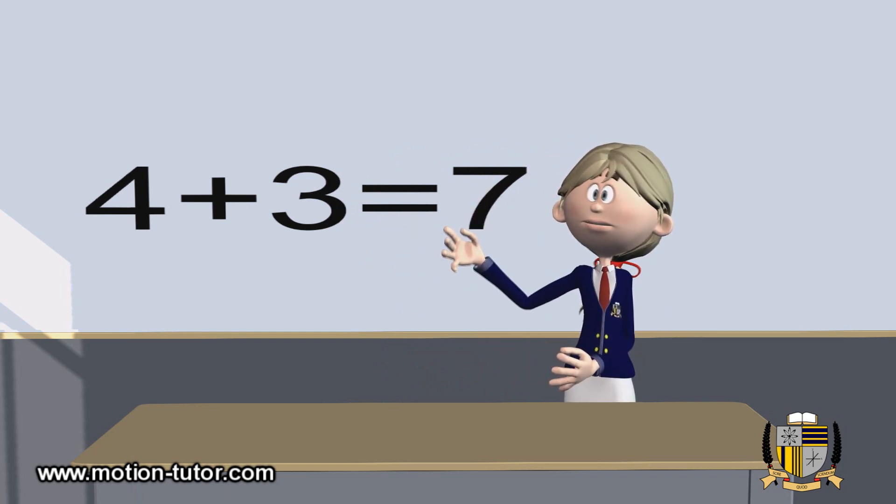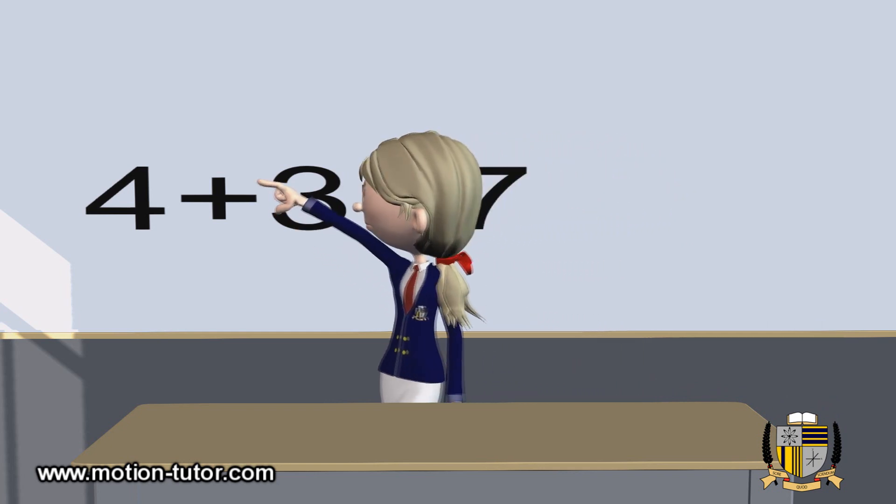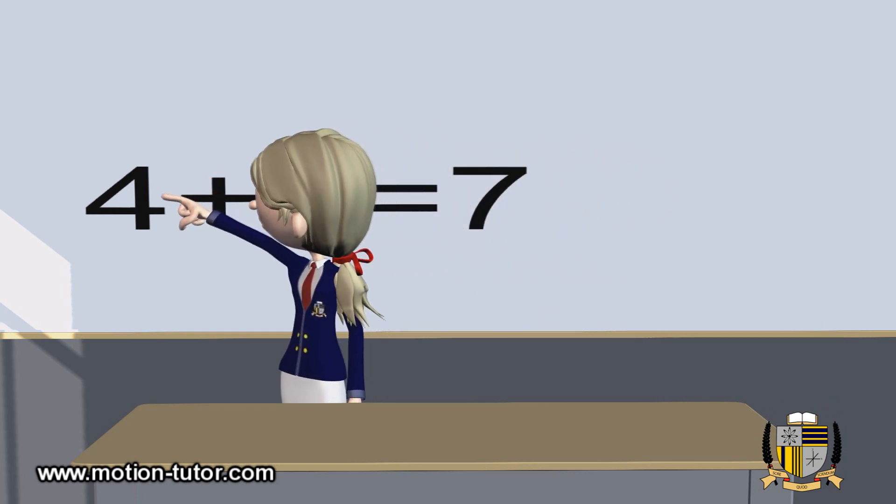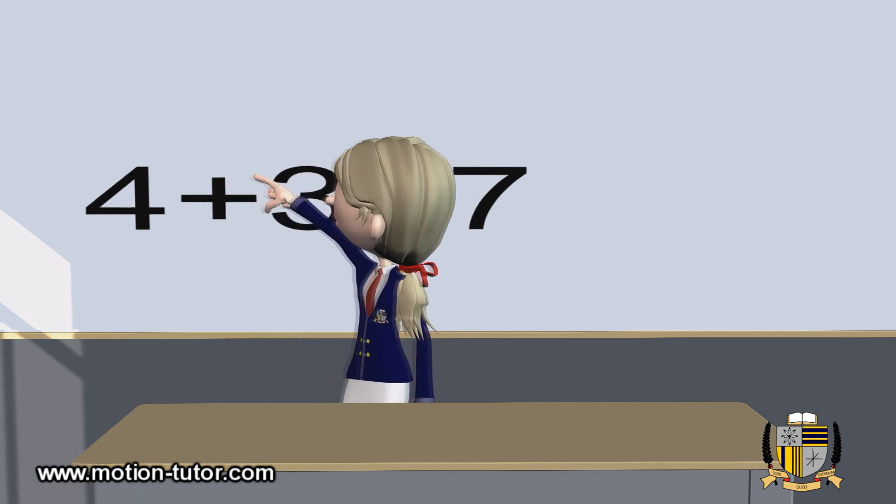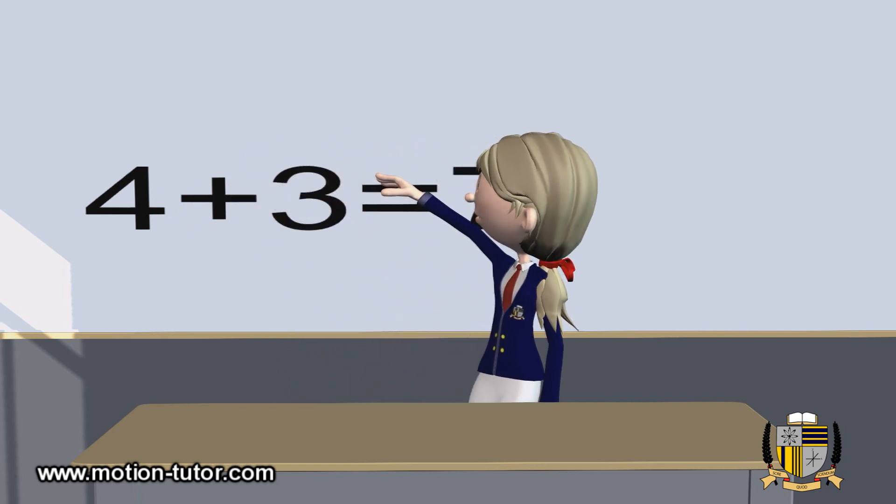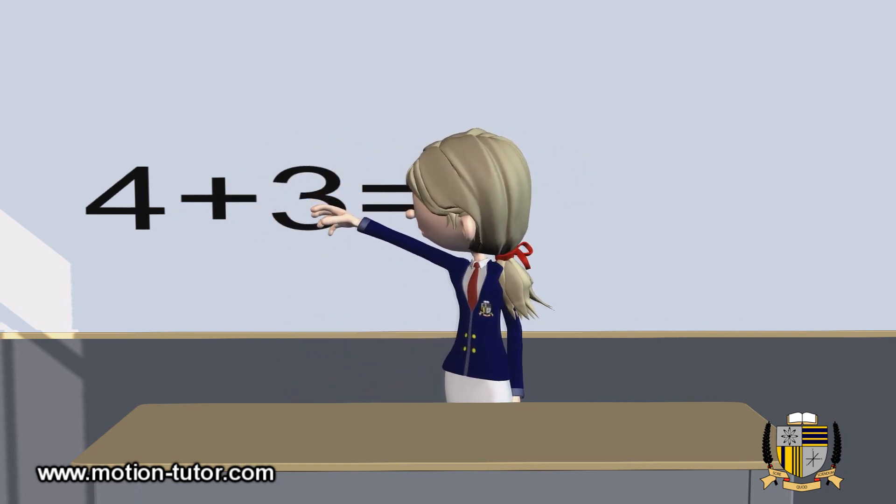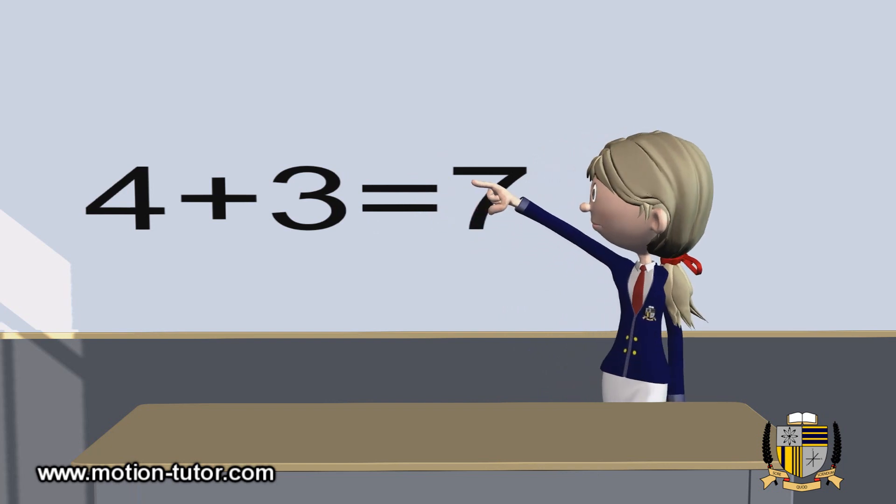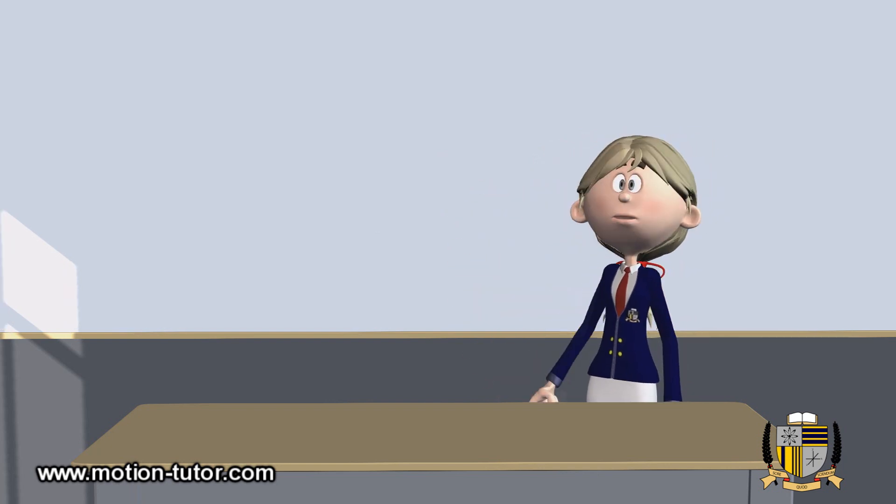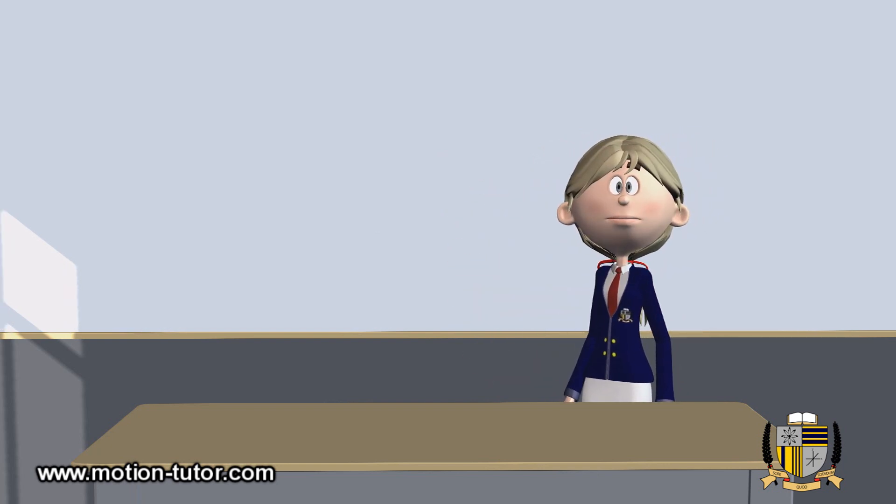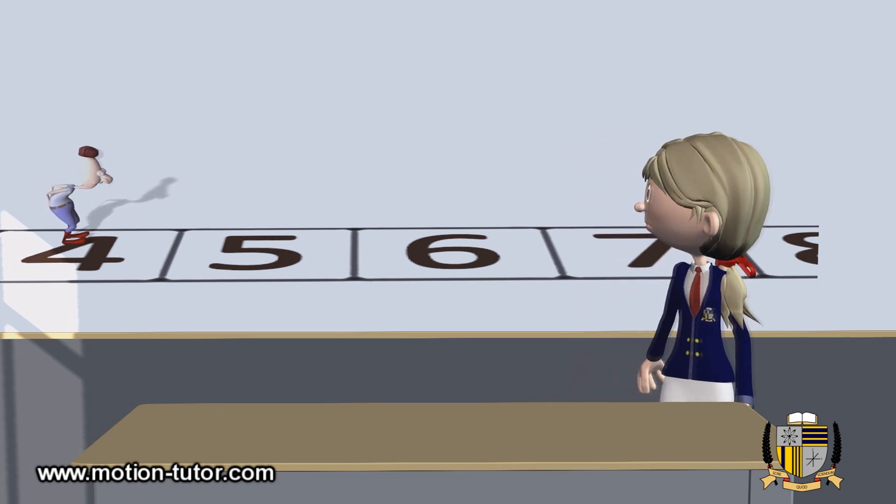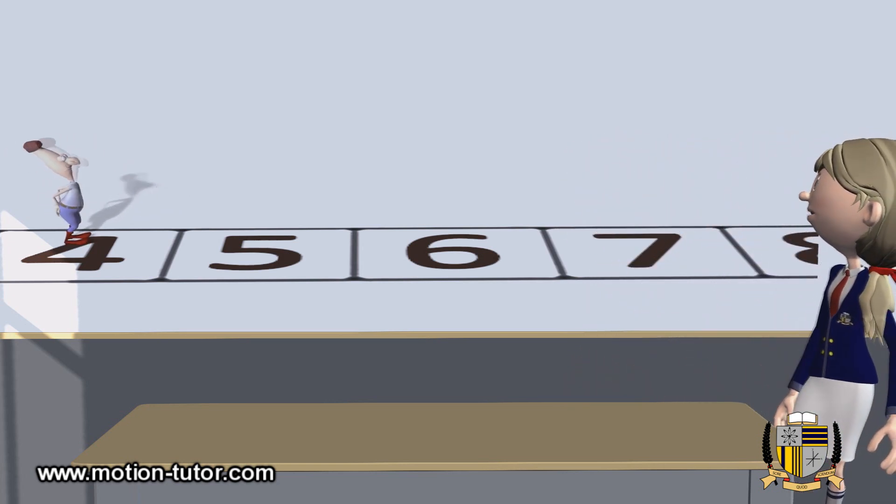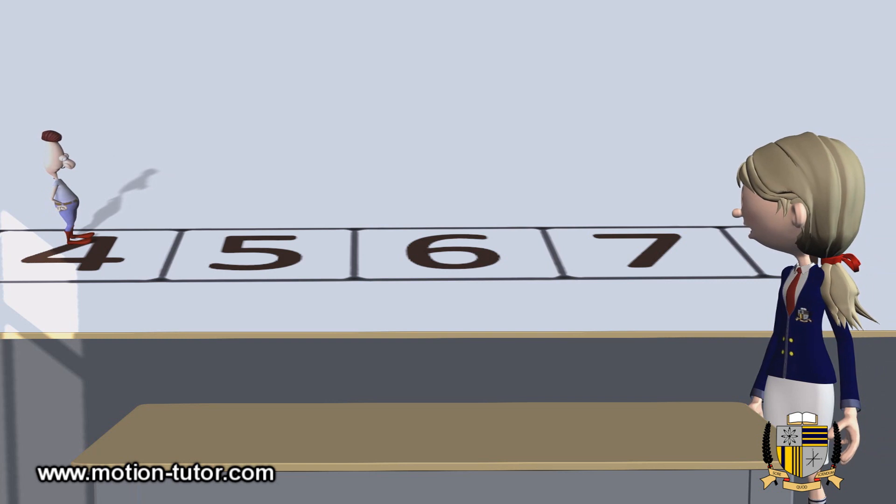The way counting on works is this: first number, we will start to count from this number. We're going to count this many times, which is three, and our final answer will be seven. It's like we have someone who's standing on the number four, and that person is going to jump three spaces and they will land on seven.